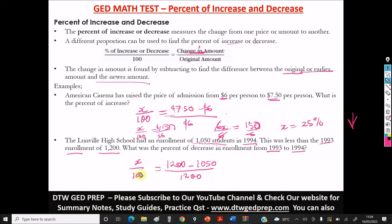So, here we get X over 100. 1,200 minus this, that will give us 150 over 1,200. Then we cross multiply.